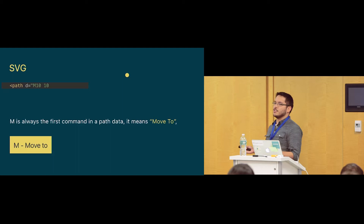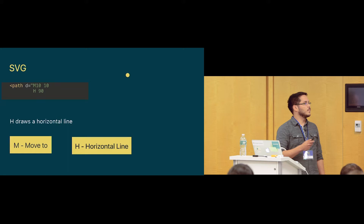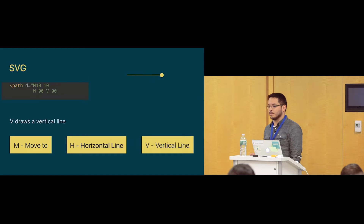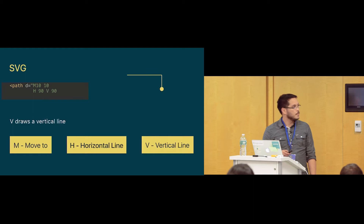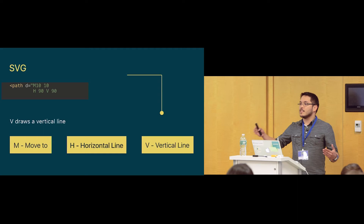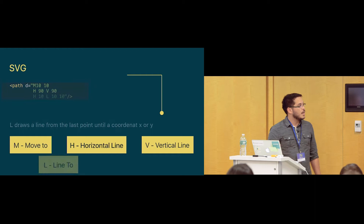Once the cursor is at position x=10, y=10, I can start drawing. For example, I can use the H command to draw a horizontal line to position 90 on that graph. Then I can use V for vertical line to draw a vertical line to 90. I can also use L for line — I can specify many lines one after the other. In this example I say go back to position x=10 and then go to y=10, and it draws the line as it should.